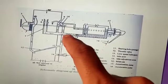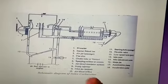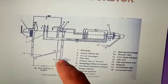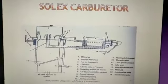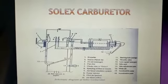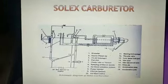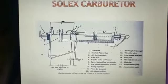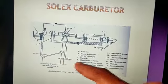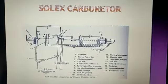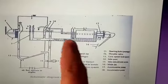For idling, there is a circuit coming here below the throttle valve. Even when you don't operate the throttle, the idling will be on. This is the idling circuit, and here there is a screw. You may have seen technicians in earlier days fiddling with that brass screw on bikes and scooters to increase or decrease the idling speed of the engine.